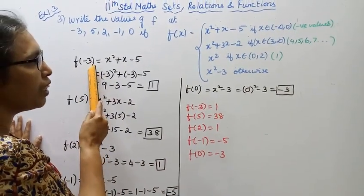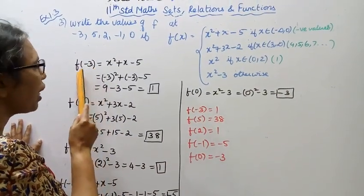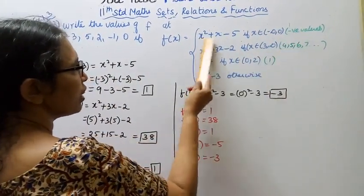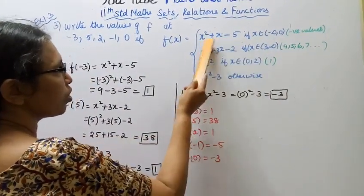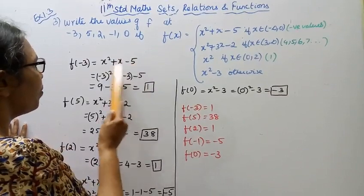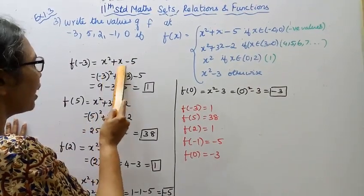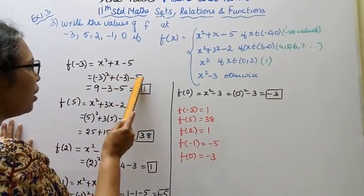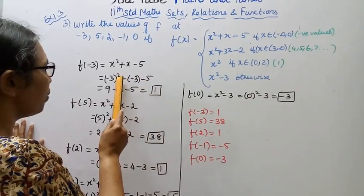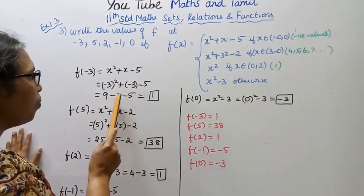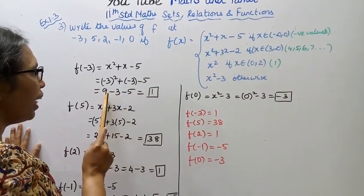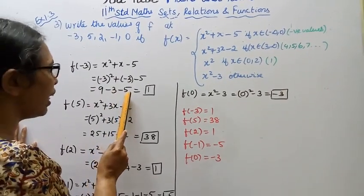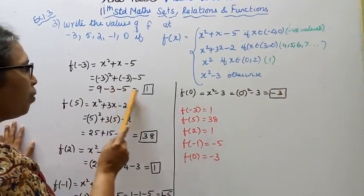So, f of minus 3: minus 3 is a negative value, so we use x squared plus x minus 5. Substituting x equals minus 3: minus 3 whole square plus minus 3 minus 5 equals 9 minus 3 minus 5 equals 9 minus 8 equals 1.